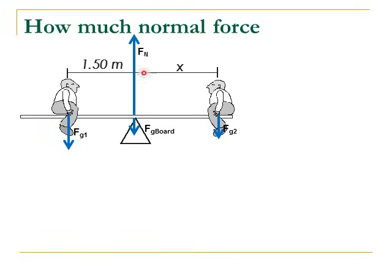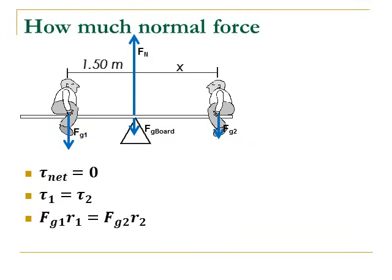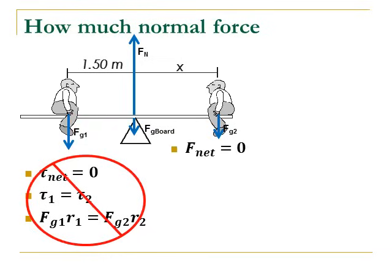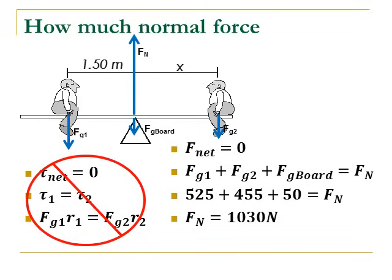The next part of the question is to find the normal force. If we try to use the torque equation, normal force doesn't appear because it's at the pivot point with a radius of zero, so we can't find it that way. Instead, we use net force equals zero: all the forces down equal all the forces up. We plug in the weights — 455 plus 525 plus 50 equals normal force — and solve to get our answer.